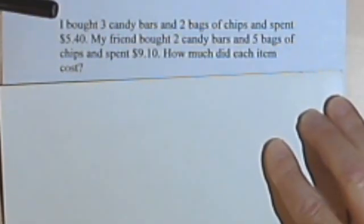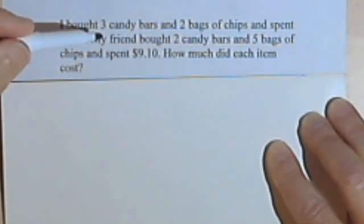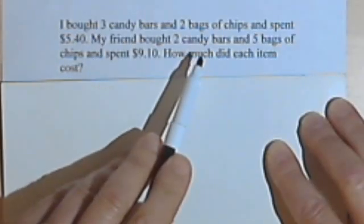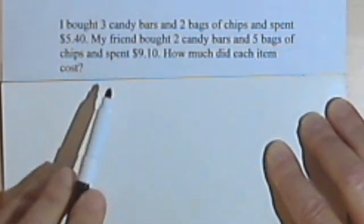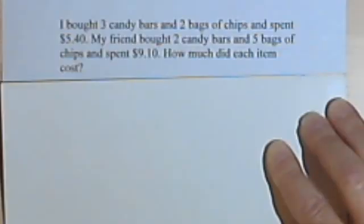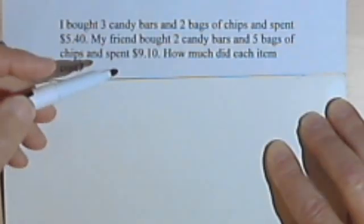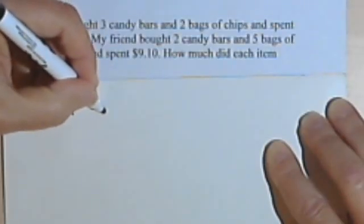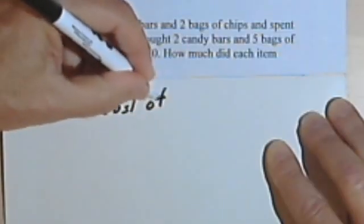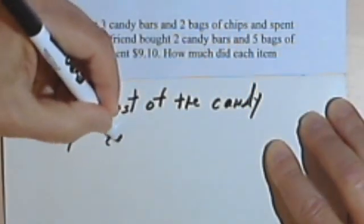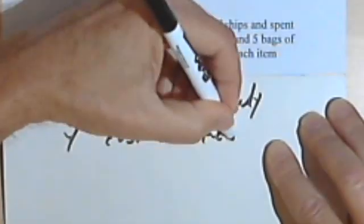I bought three candy bars and two bags of chips and spent $5.40. My friend bought two candy bars and five bags of chips and spent $9.10. How much did each item cost? We're looking for the cost of the candy bars and the cost of the chips. So since candy and chips both begin with a C, let's use x for the cost of the candy and y will be the cost of the chips.